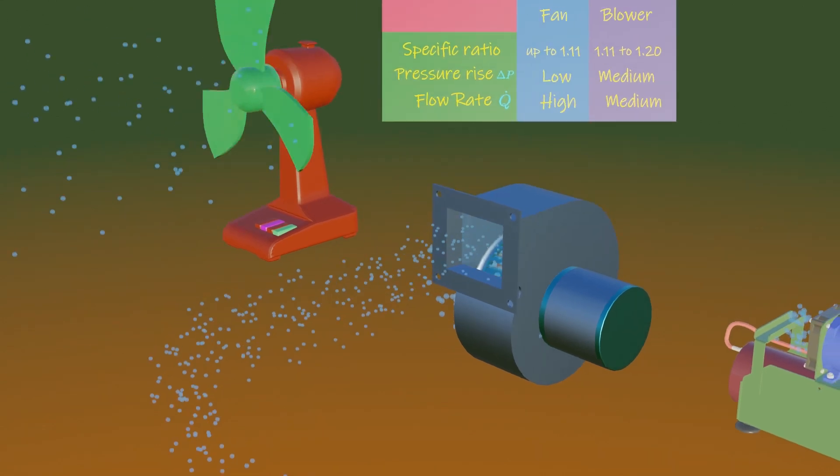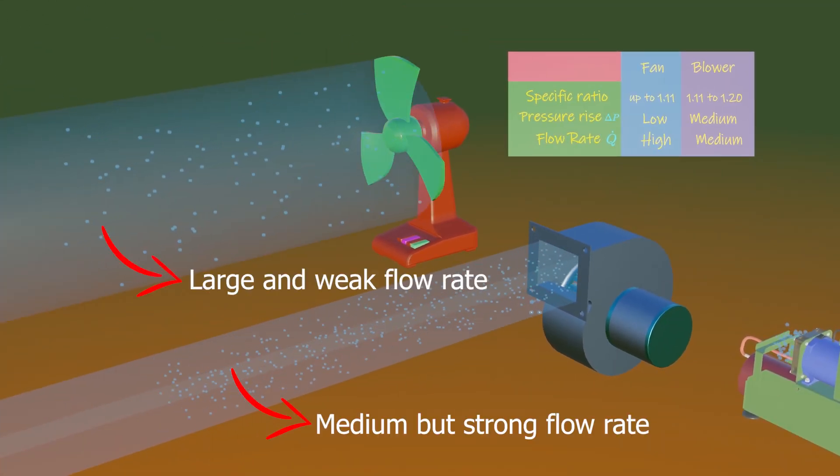Notice how the flow rate is small and stronger on a blower, whereas it is larger but weaker on a fan.